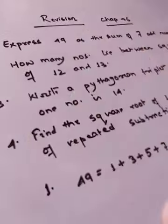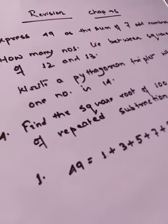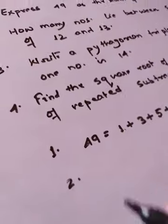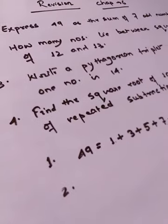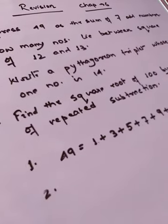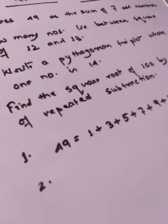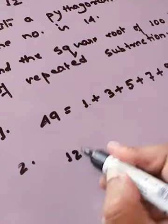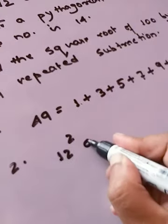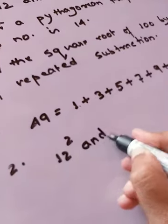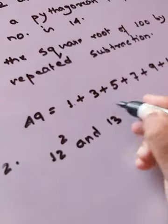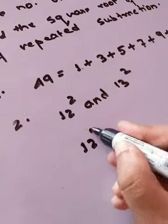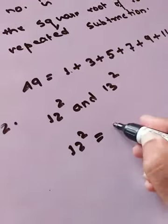This type of question will carry 2 marks. Now question number 2: how many numbers lie between the square of 12 and 13? That is, how many numbers lie between 12 squared and 13 squared? So what is the step you can follow? You can follow: 12 squared is what?